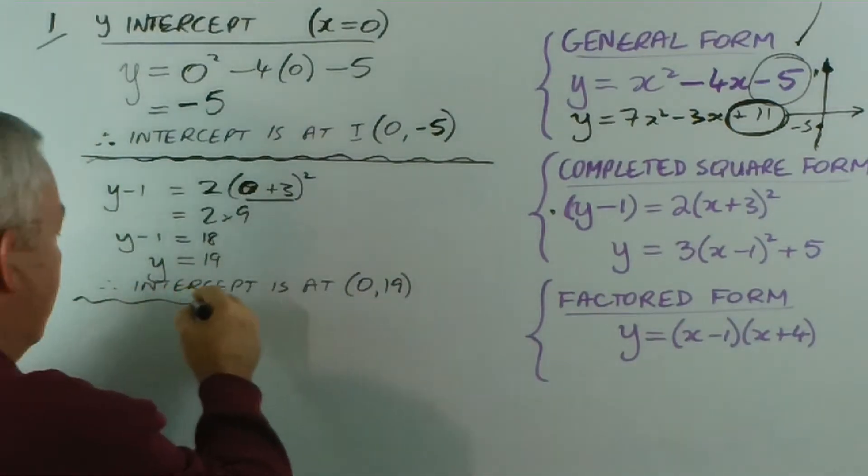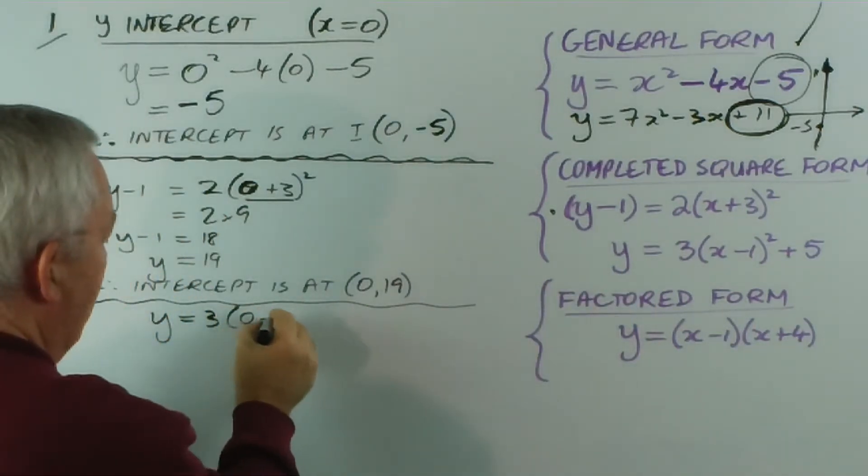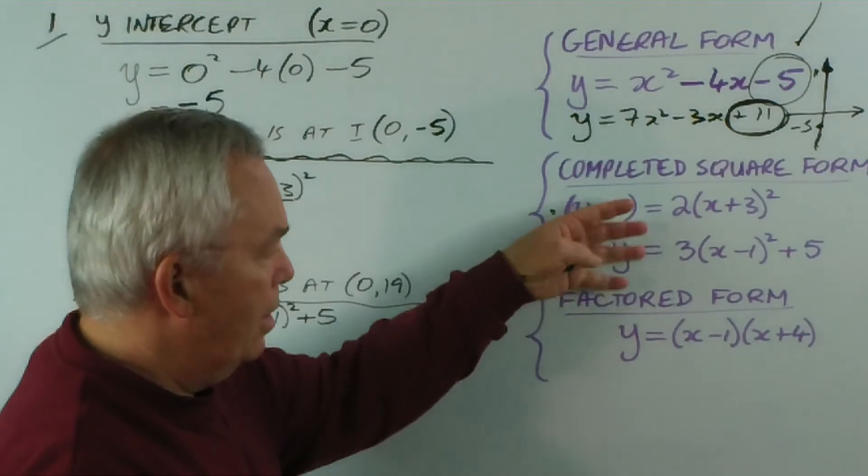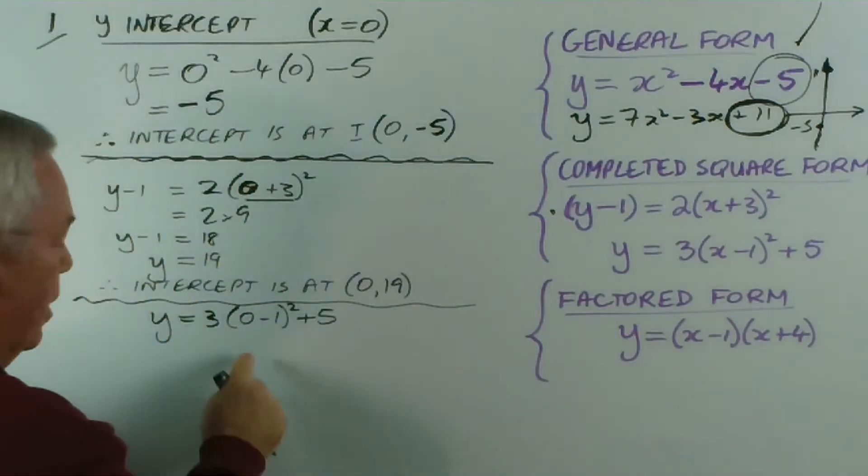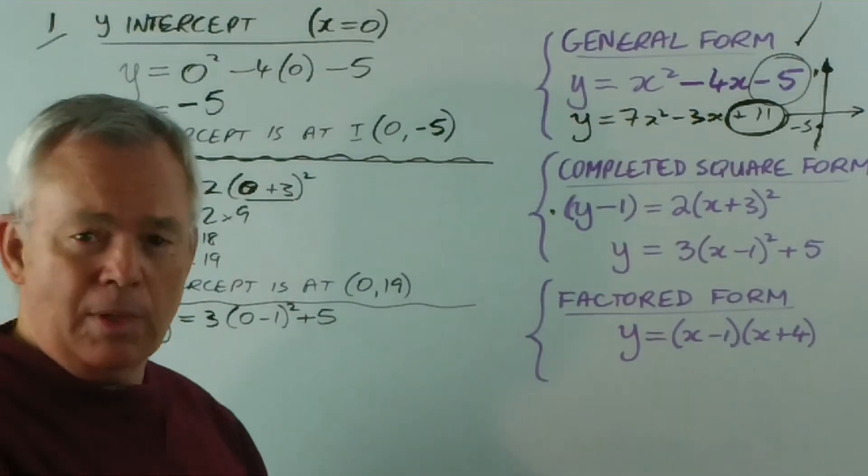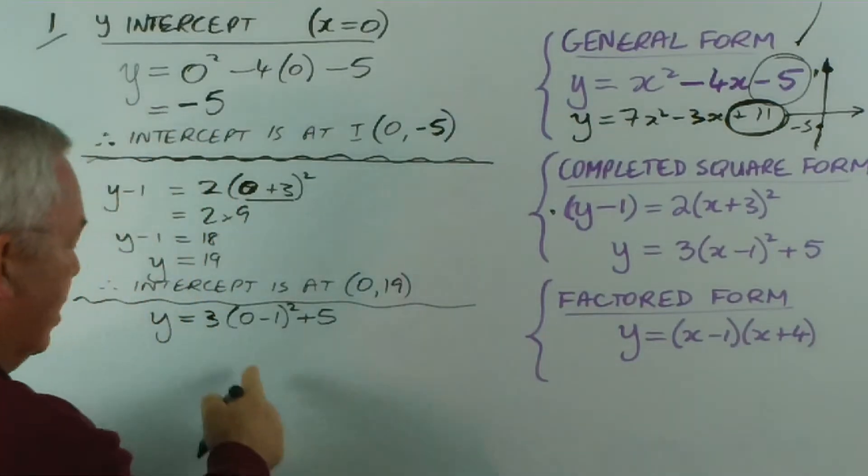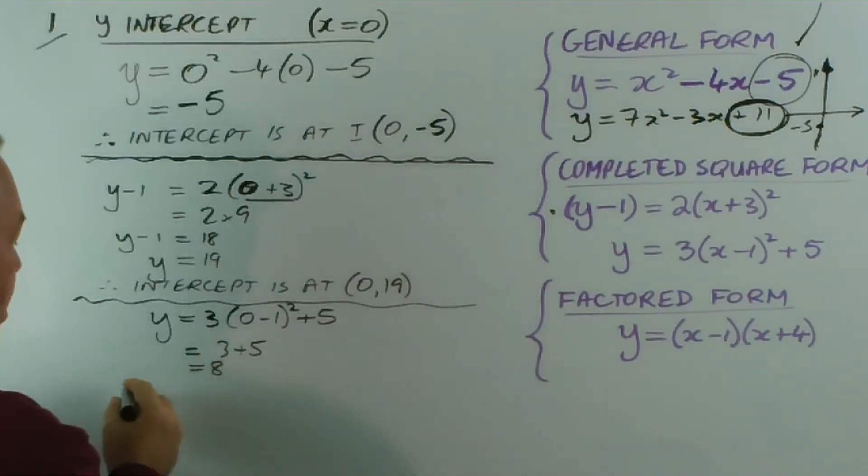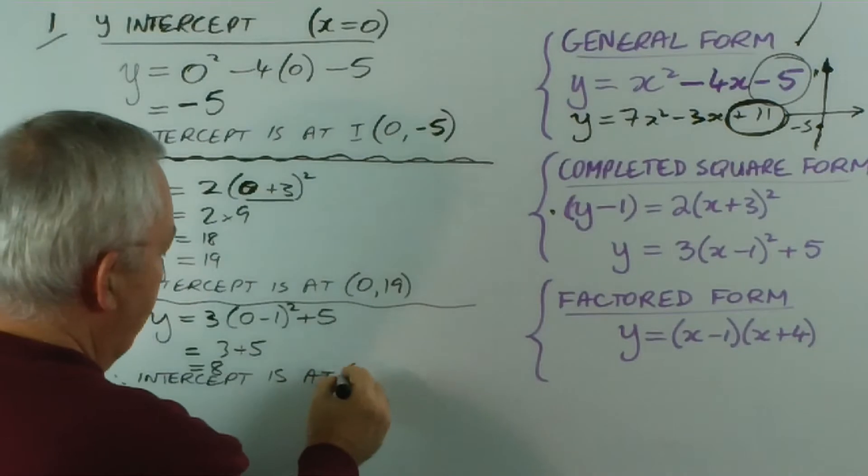We substitute in this one. y would be 3 lots of 0 minus 1 squared plus 5. Notice in all the cases here you still make the substitution quite nicely, but there's some working out involved. Here we have 0 minus 1 squared, and always remember when you're squaring a negative number that it means negative one times negative one, so you end up with two minus signs and the answer is always positive. So negative one squared is one squared, which is 8.